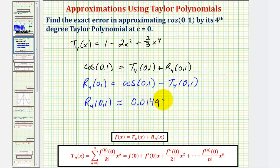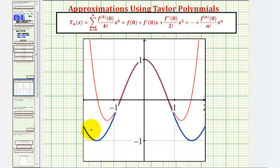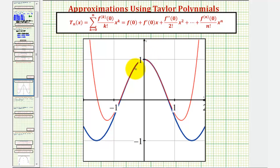Looking at this graphically: in blue is the graph of f(x) = cos(2x), and in red is our Maclaurin (Taylor) polynomial centered at zero. Notice how near x = 0, the Taylor polynomial is a very good representation of cos(2x). I hope you found this helpful.